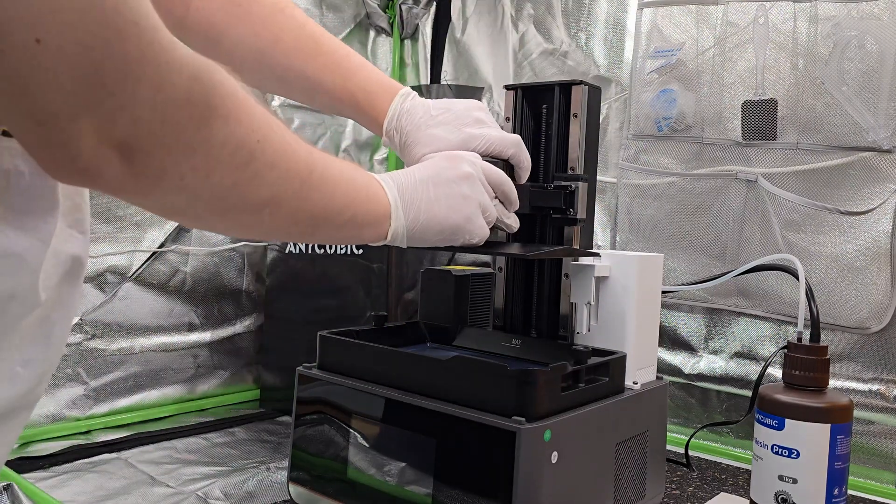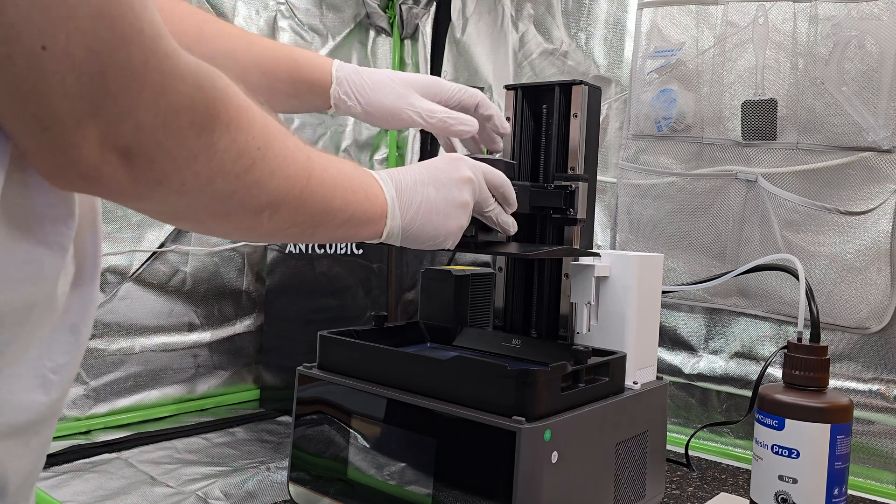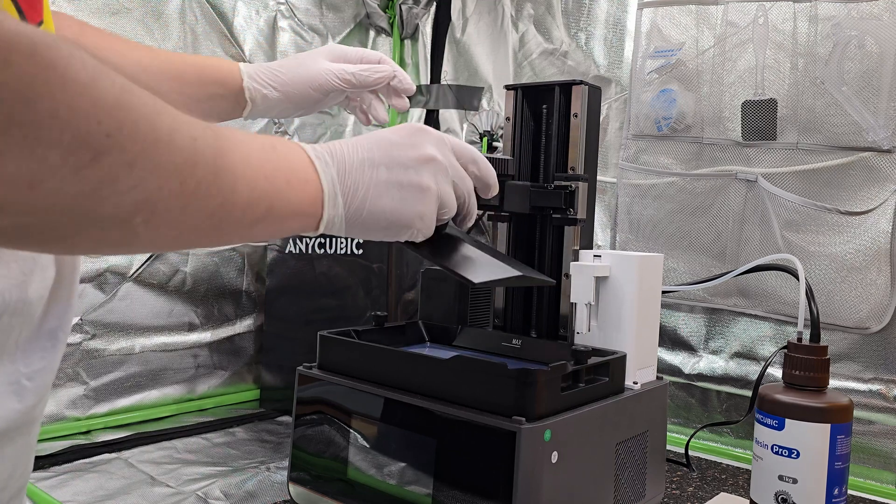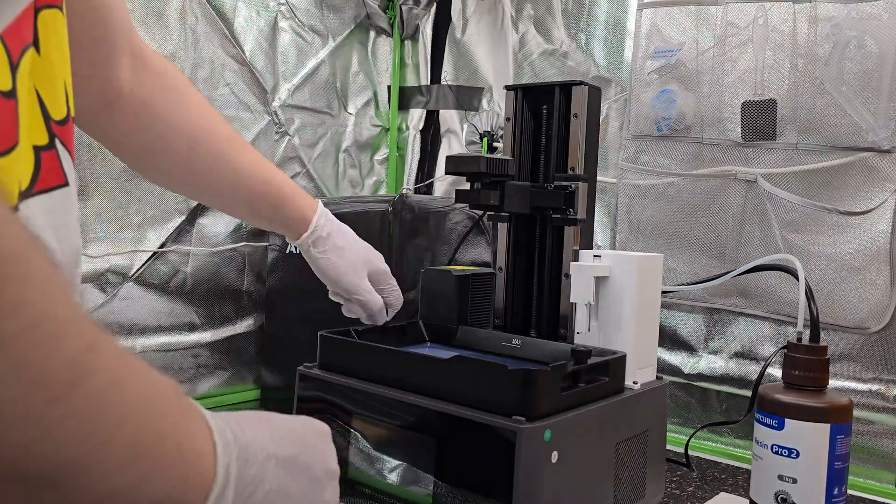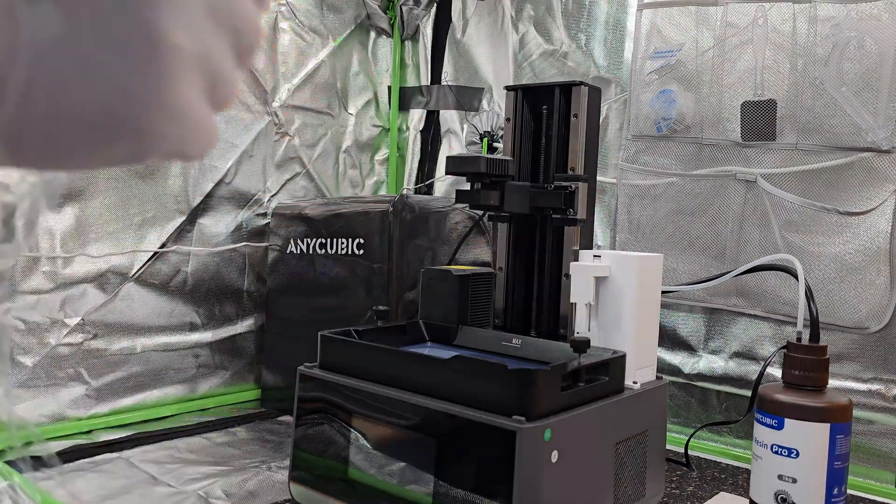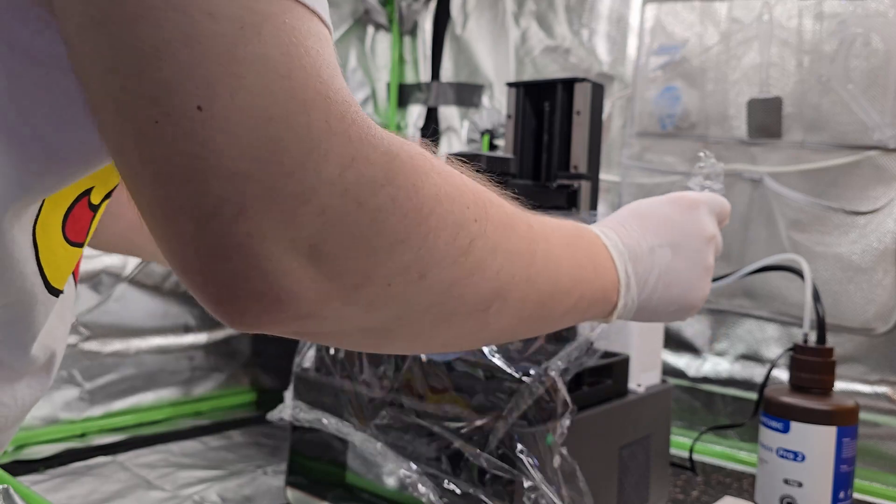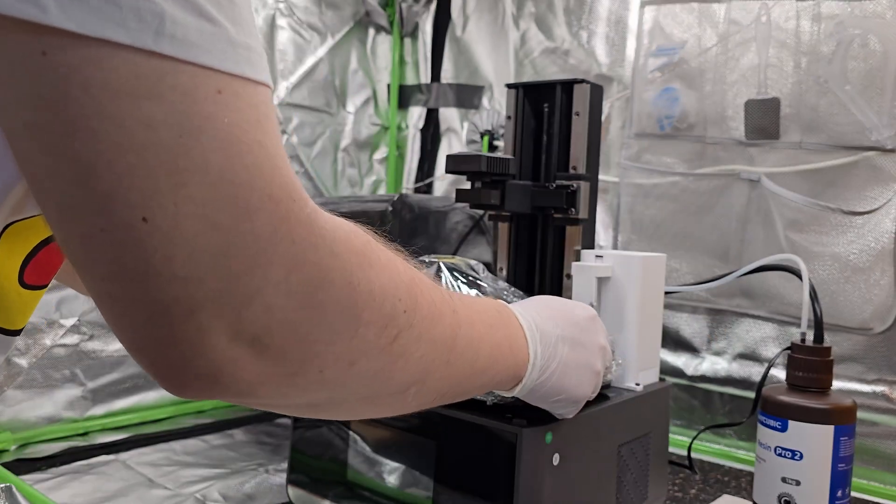So first, put your gloves on because it's gonna get greasy. First thing you want to do, move that build plate because you won't be needing it. If you have a cover for a vat, well that's perfect. I do not, so I'll just cover it with some foil to keep the dust out while I'm working on the printer.